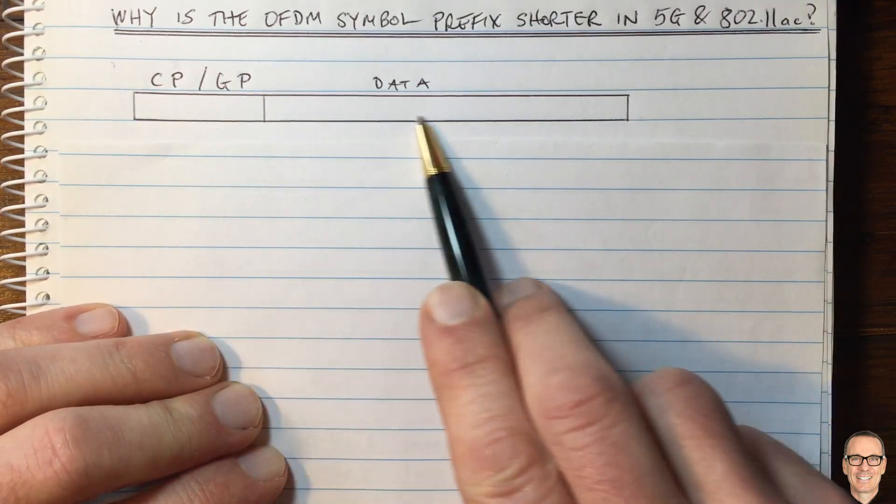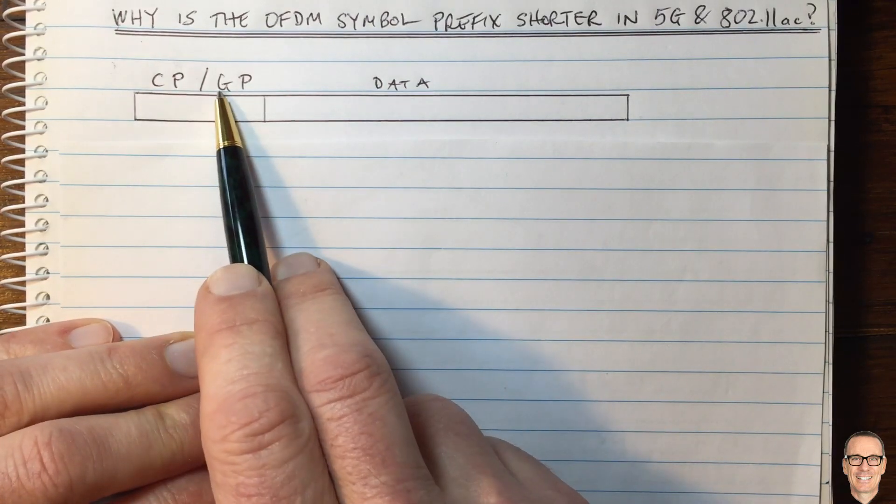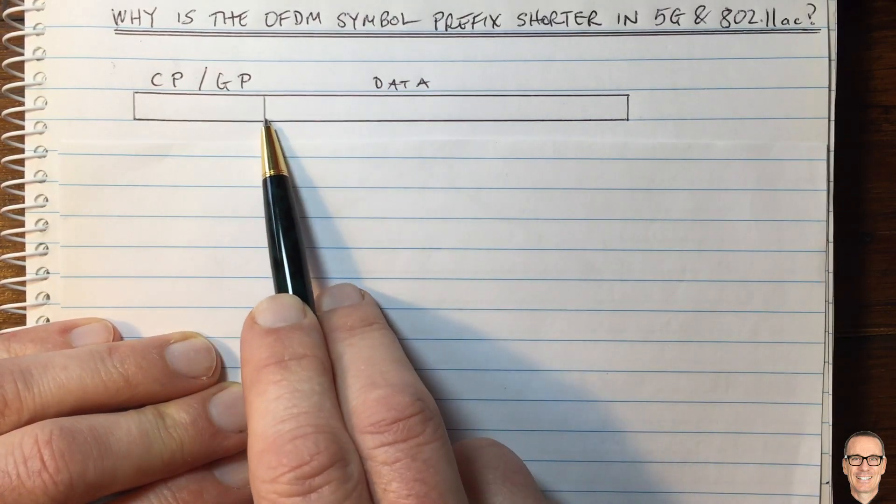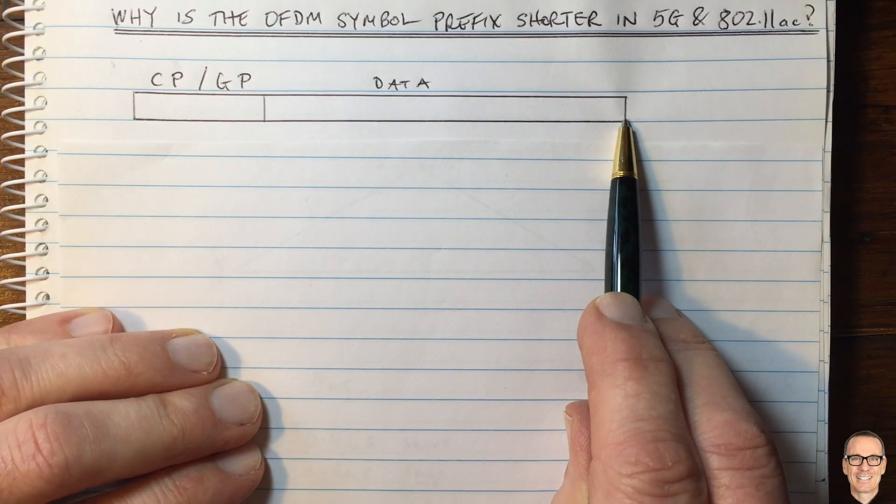Here we have a visual representation of the OFDM symbol with the cyclic prefix or guard period followed by the data in the parallel subchannels with OFDM.